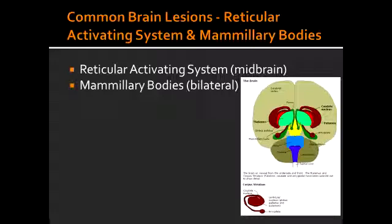What is ophthalmoplegia? Ophthalmoplegia is a condition in which there is paralysis of muscles within the eye or surrounding the eye.